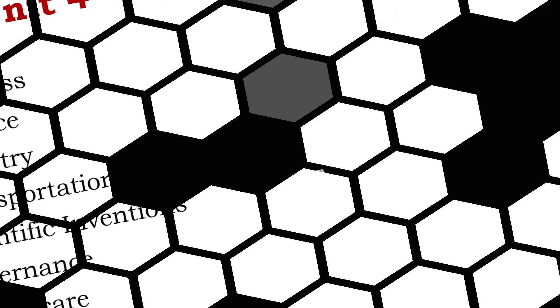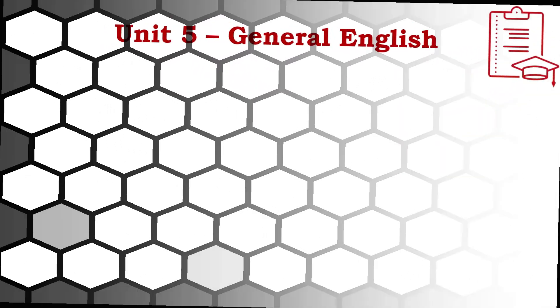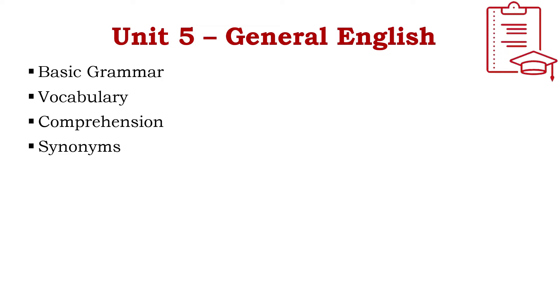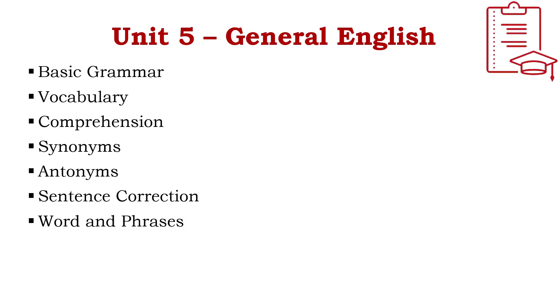Unit 5, the last part of the PGCT MCA syllabus, is General English. Topics covered include basic grammar, vocabulary, comprehensions, synonyms, antonyms, sentence correction, words and phrases, and jumbled paragraphs.